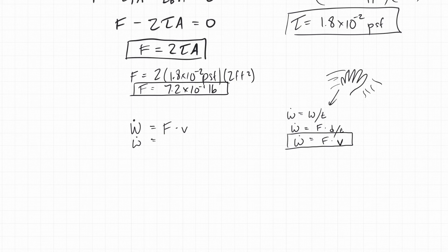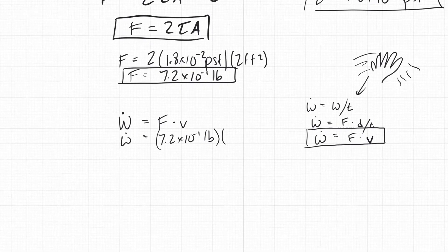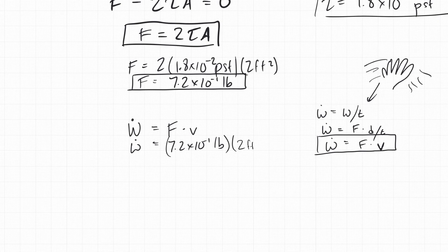My force is 7.2 times 10 to the minus one pounds — wait, let me check the velocity. It was two feet per second. So whatever is pulling this plate is doing a rate of work of 7.2 times 10 to the negative 1 pounds times 2 feet per second.